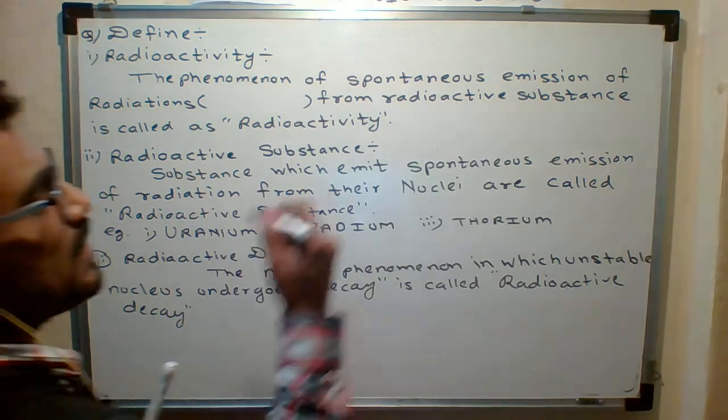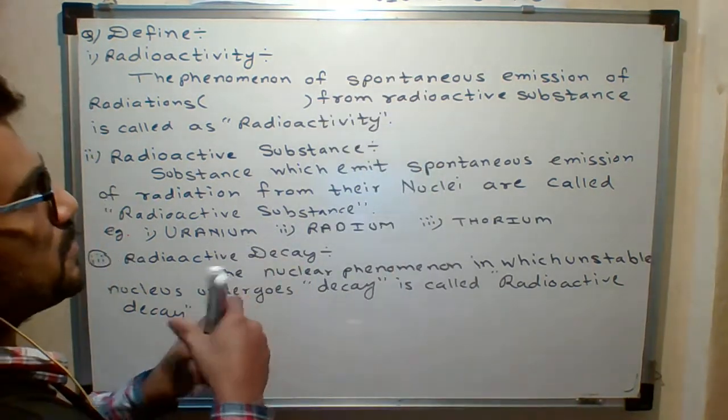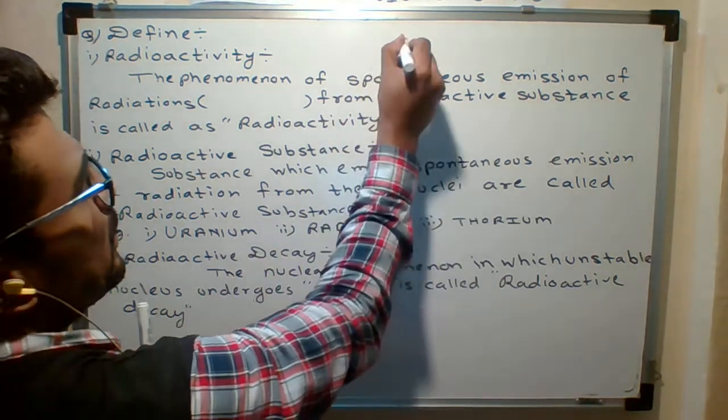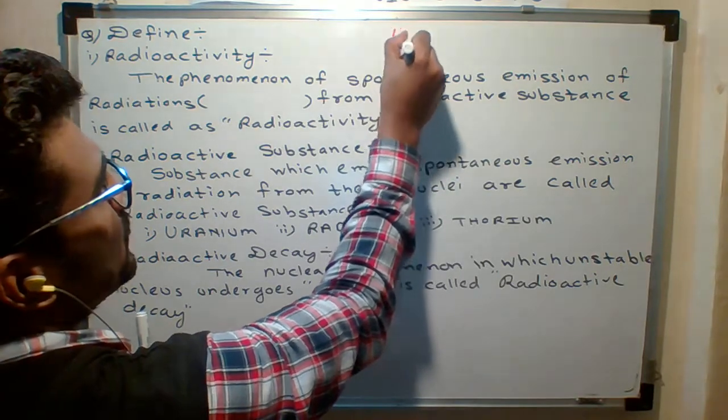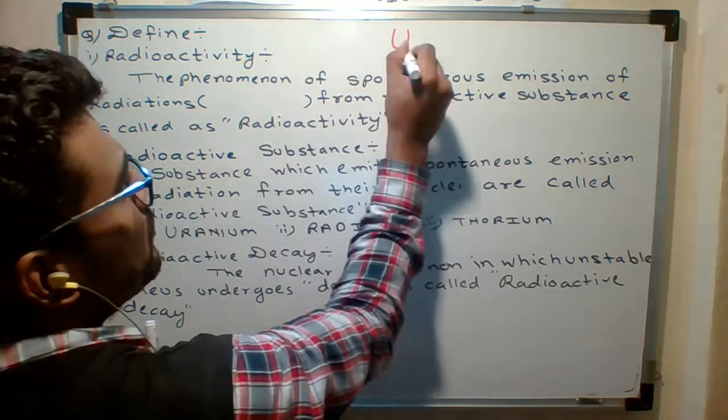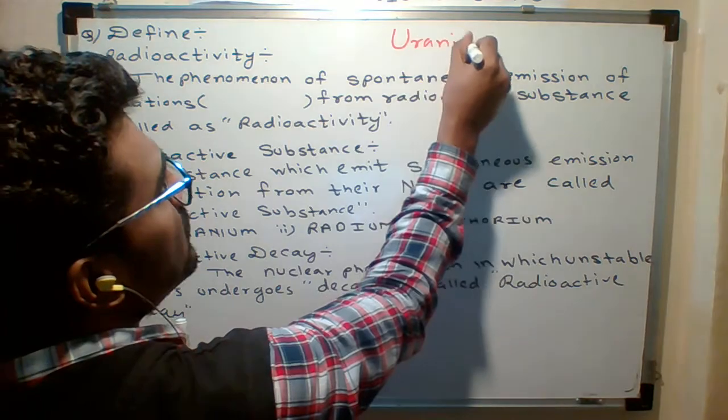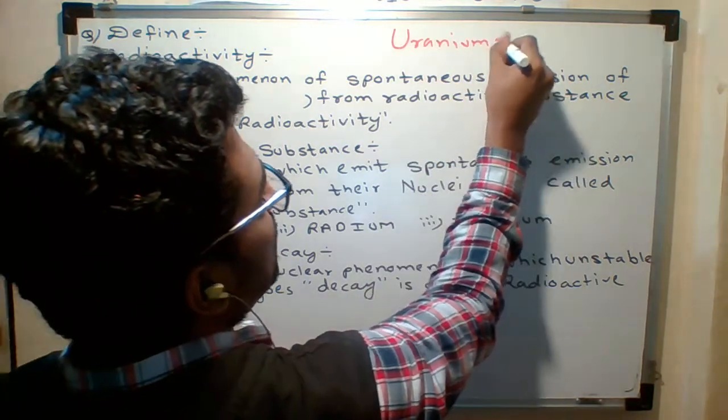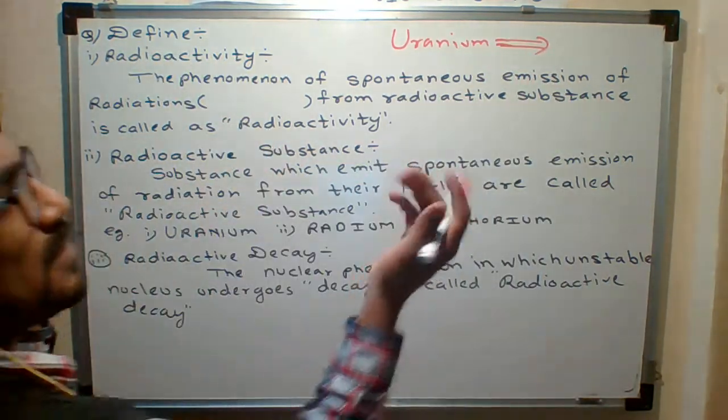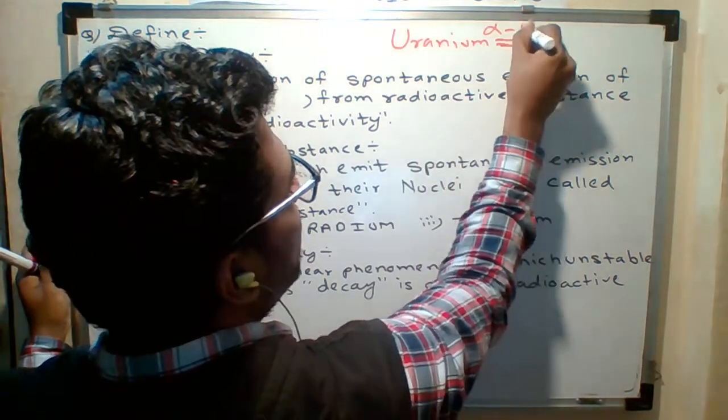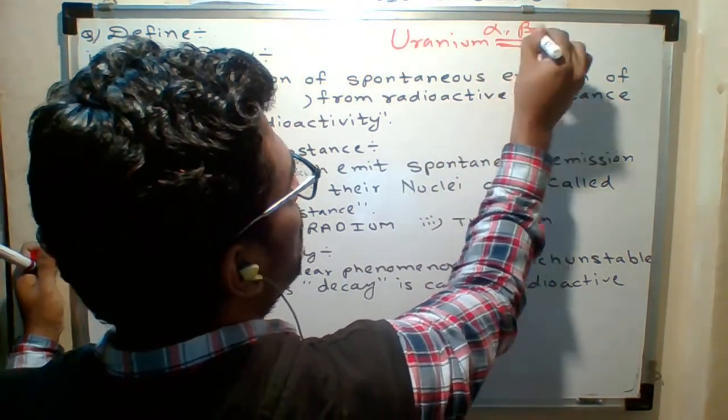Radioactivity is what? As we know, if I take radioactive substance, let that radioactive substance be uranium. Uranium is what radioactive substance? Once I keep this uranium outside, there are some radiation you will find: alpha, beta or gamma.